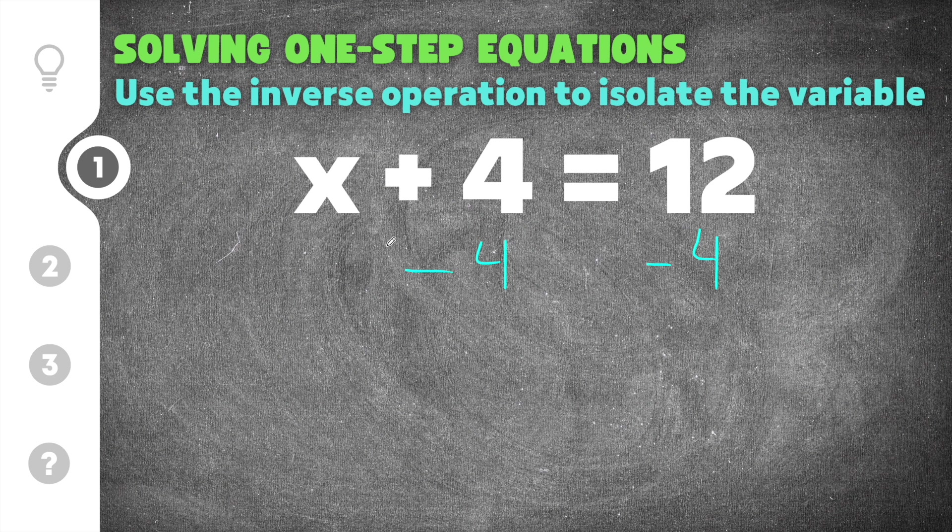Remember anything you do to one side you also have to do to the other. So on the left here we have x plus 4, but we're going to minus 4, so plus 4 minus 4. Well those cancel and all we're left with on this side is x, which is what we want. We want an isolated variable, and then on the right you do 12 minus 4, and 12 minus 4 is 8. So the solution to this one-step equation is x equals 8.